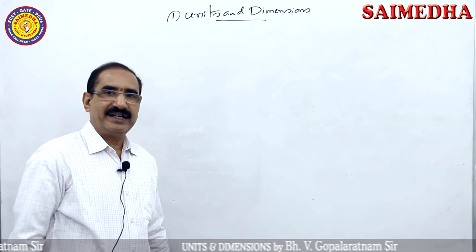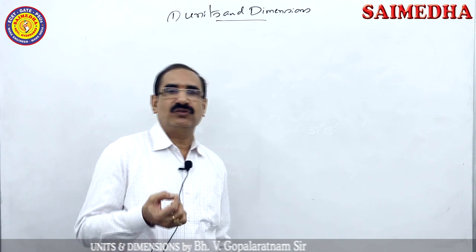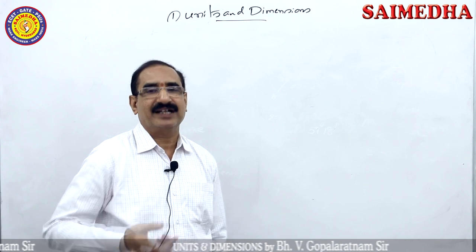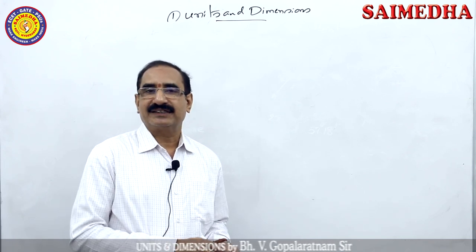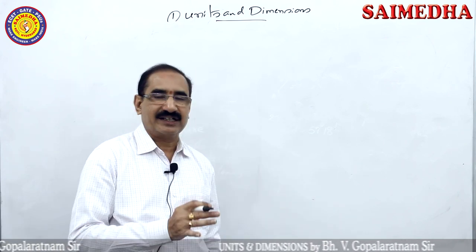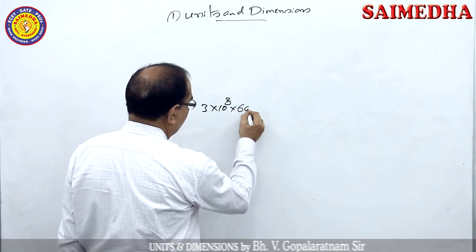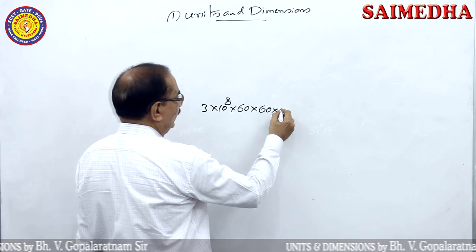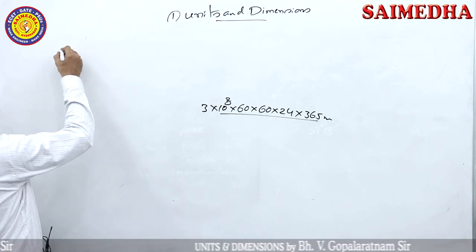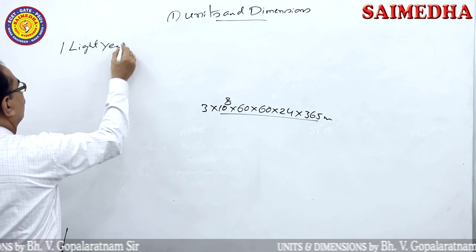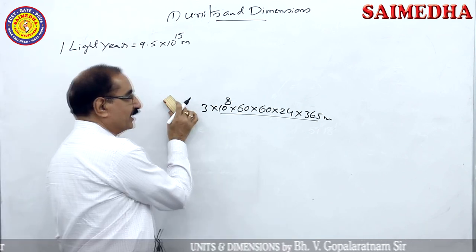In SI, the unit of length is the meter. For very small distances like wire thickness, we use millimetres, and for very large distances like between stars, we use the light year. A light year is the distance travelled by light in one year. Light travels 3×10⁸ meters per second, and one light year is approximately 9.5×10¹⁵ meters. Another unit is the parsec, which is an abbreviation for parallactic second.